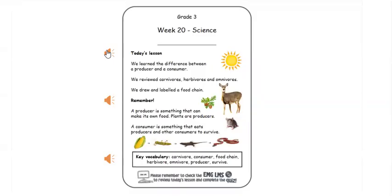Today's lesson we learned the difference between a producer and a consumer. We reviewed carnivores, herbivores, and omnivores. We drew and labeled a food chain. Remember, a producer is something that can make its own food. Plants are producers. A consumer is something that eats producers and other consumers to survive. Key vocabulary: carnivore, consumer, food chain, herbivore, omnivore, producer.